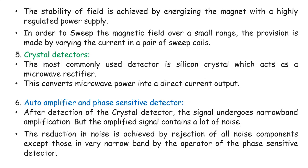An important component is the crystal detector. The most commonly used detector in ESR is the silicon crystal, which acts as a microwave rectifier. The detector converts microwave power into a direct current output — this is the basic function of any detector.